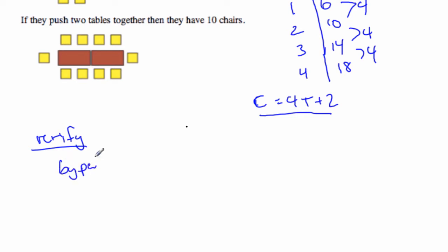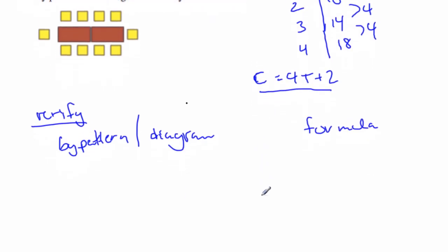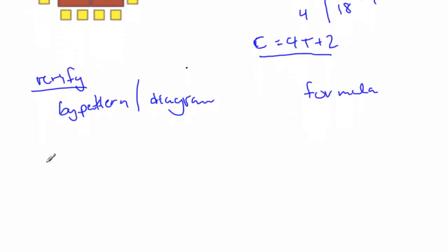So we're going to do it by pattern, or rather, in this case, diagram. And then we're also going to do it by formula. Okay, so we're making sure we get the same result. I mean, you can do a little bit of make sure that your rule works for the first four to start with, but I think you can do that mentally. Right? But then these are the two that you're going to show nice and clearly.